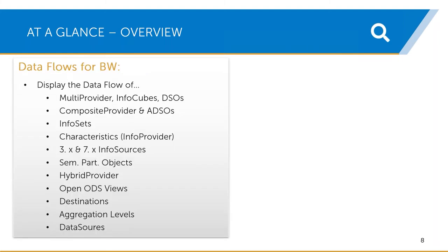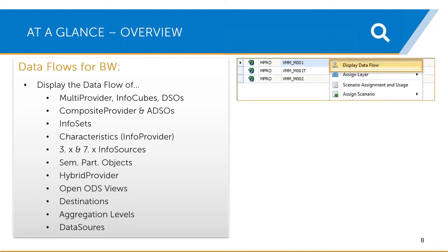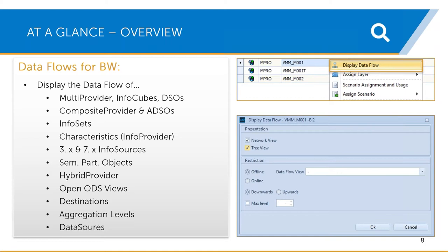We are offering the data flow analysis for the following object types. So you can see we provide multi-providers and composite providers, infosets, characteristics, and so on. We are also supporting the data flow analysis for old object types, but also for the new BW for HANA object types. Basically, you use our entity grid to search for the object for which you want to see the data flow. You select the context menu and select display data flow. Then you will get the option if you want to have the data flow visible as a network view or a tree view, and whether you want the offline or online version.